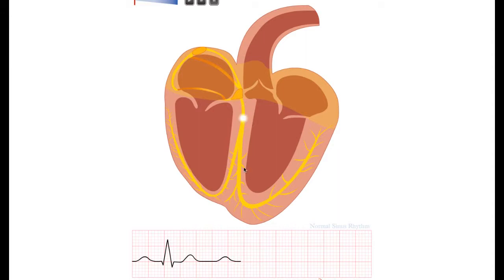Then the electricity jumps through the conduction system, through the His bundle and the left bundle towards the left part of the septum. Then the septum is activated from the left to the right, resulting in a small Q wave in lead 2.